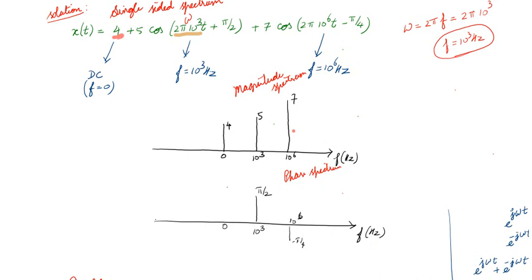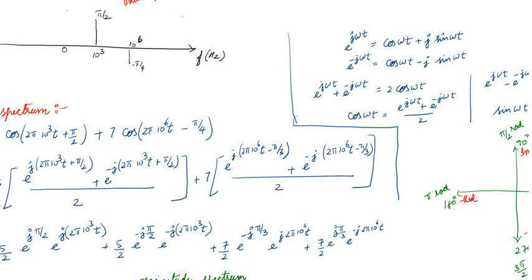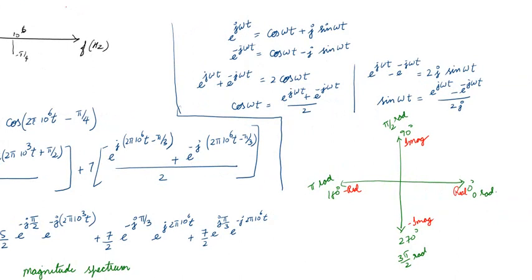Now we will move into the double-sided spectrum, which is very important and directly related to the Fourier transform. Double-sided spectrum is widely used rather than the single-sided spectrum. We are taking the same problem. Using Euler's relation — where e^(jωt) = cos(ωt) + j·sin(ωt) and e^(−jωt) = cos(ωt) − j·sin(ωt) — we can add these two to get cos(ωt) = [e^(jωt) + e^(−jωt)] / 2.